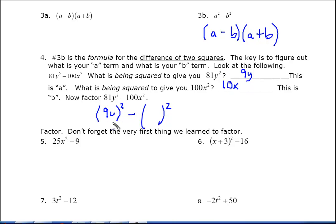Again, that's your 9y, and then what's being squared to give us 100x squared? That's 10x. So your a is 9y, and your b is 10x. b squared, of course, is 100x squared, but just the b is 10x.